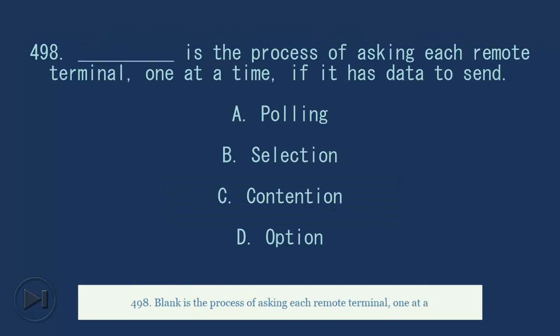498. Blank is the process of asking each remote terminal, one at a time, if it has data to send. A. Polling. B. Selection. C. Contention. D. Option. Answer, A. Polling.